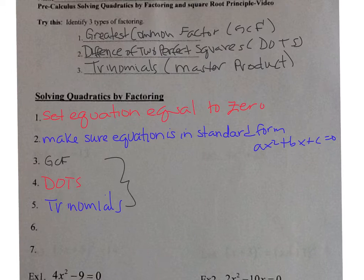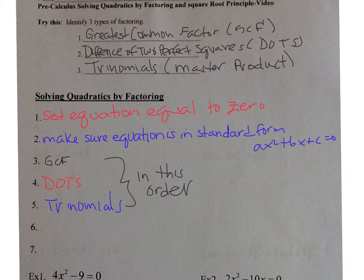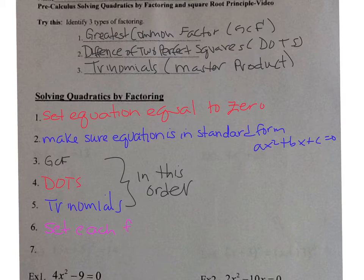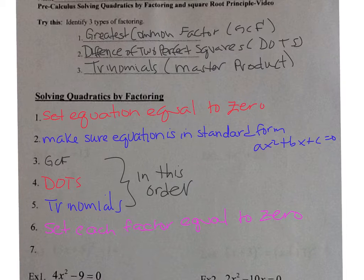After you factor, you're going to set each factor equal to zero. Then after that, you're going to solve for the variable.